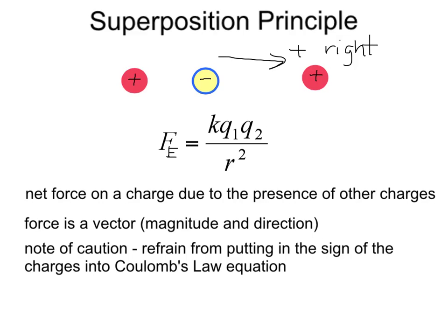A note of caution: please refrain from putting the sign of the charges into Coulomb's law equation. If you put the signs of the charges in your equation for Coulomb's law, then you're going to get directions of forces independent of what you defined as to the right being positive. You'll see this in our next example.